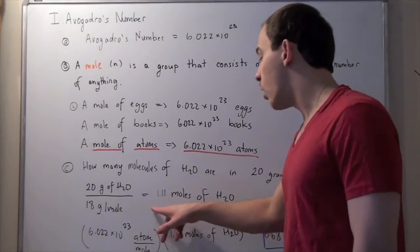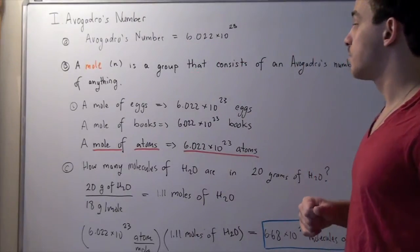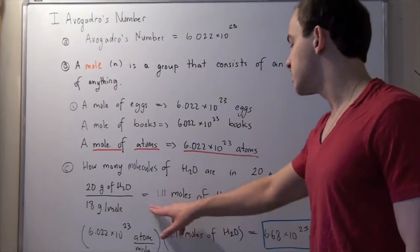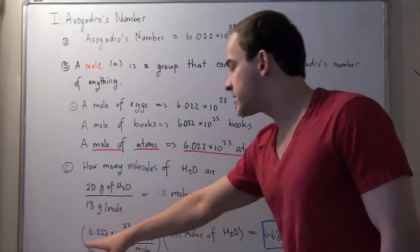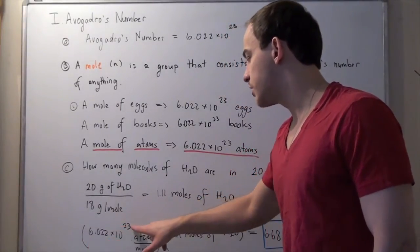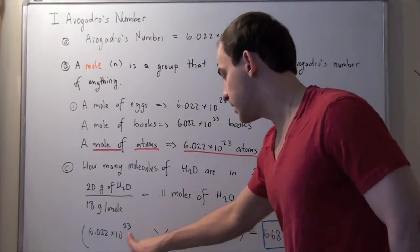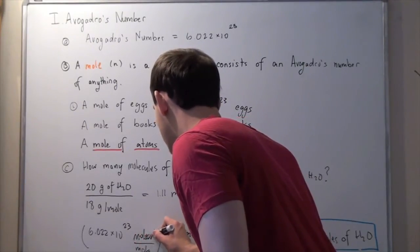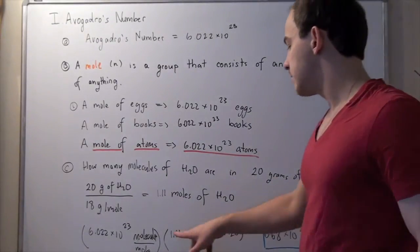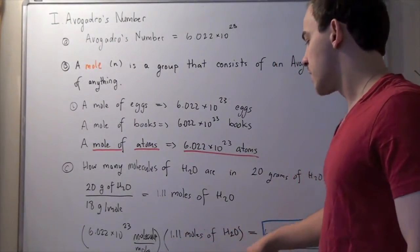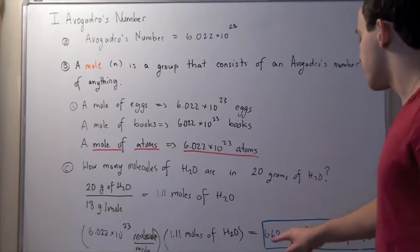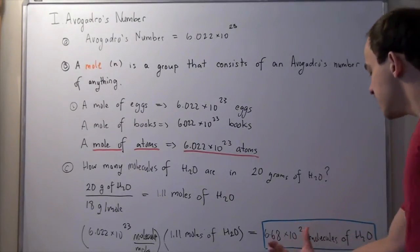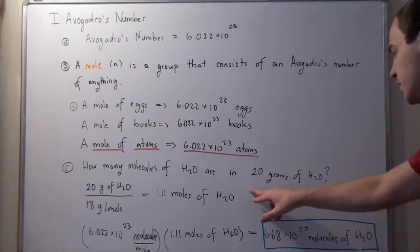We know that in one mole of anything, there are this many molecules. So, to find the number of molecules in 1.11 moles of water, we simply multiply this number by Avogadro's number. So, we get 6.022 times 10 to the 23 molecules per mole times 1.11 moles of water. The moles cancel, and we're left with 6.68 times 10 to the 23 molecules of water. This is how many molecules are found in 20 grams of water.